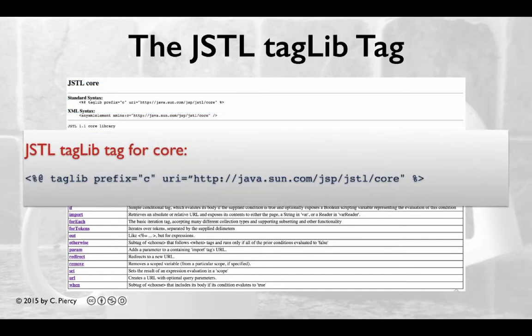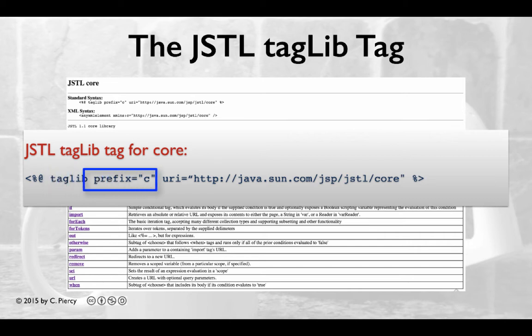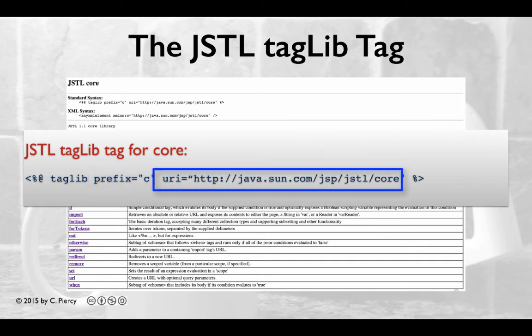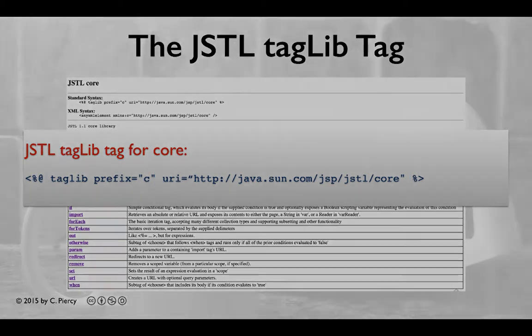Let's take a closer look. The tag uses the JSP page level delimiters. The keyword for this tag is taglib, indicating that we will be specifying a tag library to use in this page. The prefix argument specifies the prefix used in the tags from this group. Finally, the URI parameter provides a pointer to the data type document for the tag library.